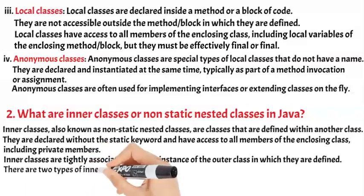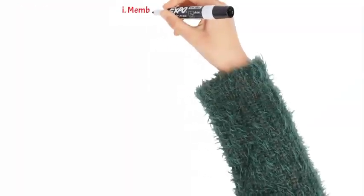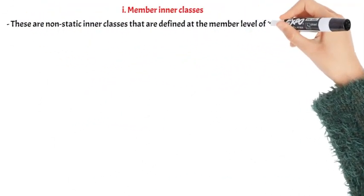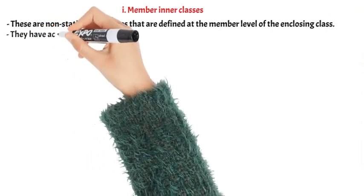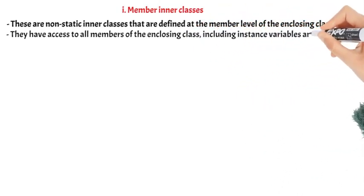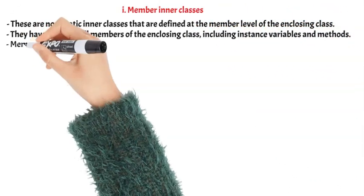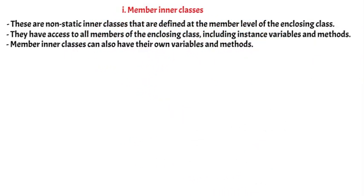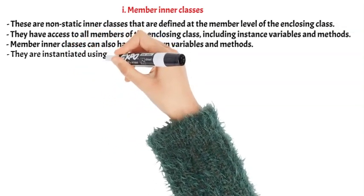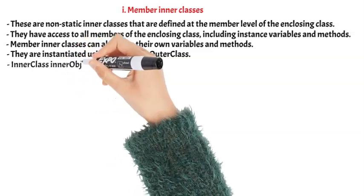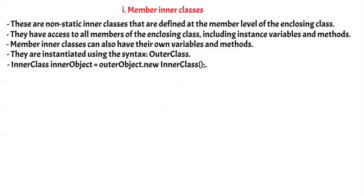There are two types of Inner Classes. 1. Member Inner Classes: These are non-static Inner Classes that are defined at the member level of the enclosing class. They have access to all members of the enclosing class, including instance variables and methods. Member Inner Classes can also have their own variables and methods. They are instantiated using the syntax: OuterClass.InnerClass innerObject = outerObject.new InnerClass().